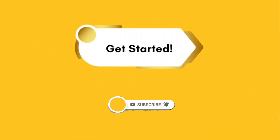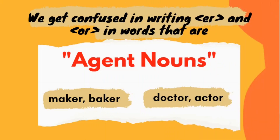The first thing we need to know about ER and OR is the etymology. What are ER and OR words? They are agent nouns. We have some different uses of ER as well, but here we are confused between ER and OR when we are writing the agent nouns. What are agent nouns? Nouns that we use for a person who does something — like a baker bakes something, a maker makes something, a doctor is a professional, and so is an actor. These are all nouns ending with the ER sound and they are called agent nouns.